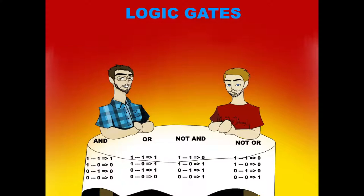Binary is a two-number system: you have a one and a zero. Effectively, one is on and zero is off. We talked a little bit about why computers use binary — because it's very stable. A system that uses more than two numbers would become unstable as the computer system ages and degrades, and the signals will become more and more confused.